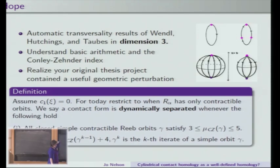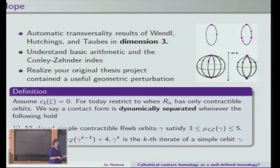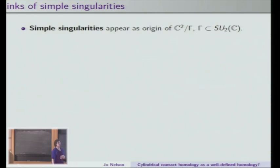The hope for contact homology is that you write down some homological invariant of the contact structure — which would be nice because there are all these different contact forms running around defining the same contact structure — and then you could say something qualitative about the Reeb dynamics associated to a given contact structure without writing down a specific contact form.